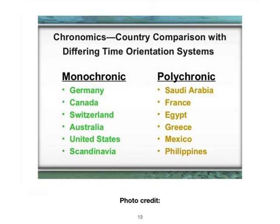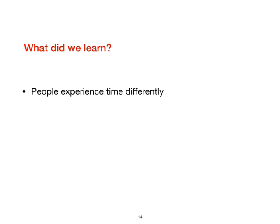Some monochronic countries include Germany, Canada, Switzerland, Australia, United States, and Scandinavian countries. On the polychronic side are Saudi Arabia, France, Egypt, Greece, Mexico, and the Philippines. France is a tricky case — because they've also depended a lot on conventions and discussions. Since it's a European country, they're also very particular about time. In high context culture, they won't just let go of time. So what we learn is that people experience time differently — that's the important point.